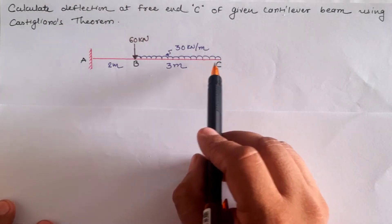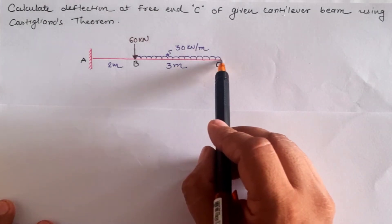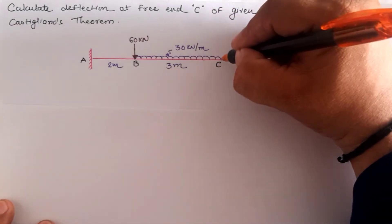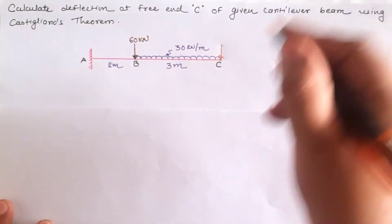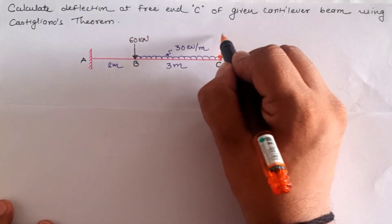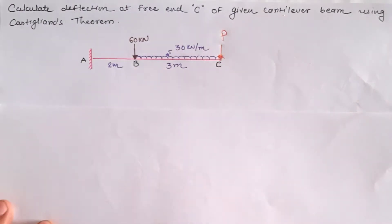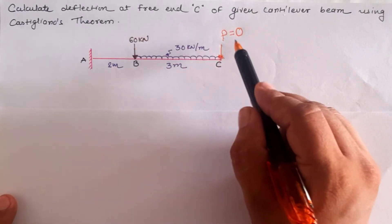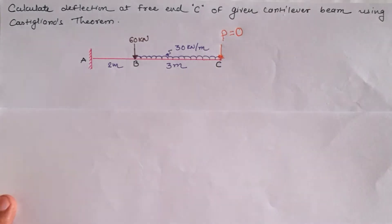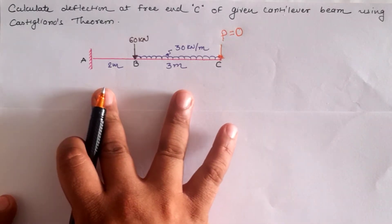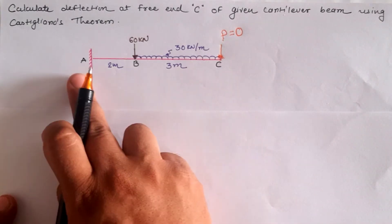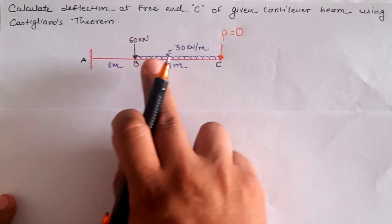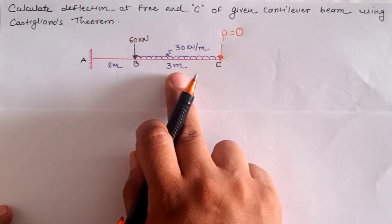At the location of C we have to calculate the deflection, and at that location there must be an arbitrary load P, which is 0 in the absence of a load at location C. In this calculation we have two segments: A to B having the length 2 meters, and B to C having the length 3 meters.